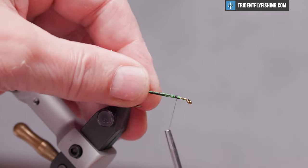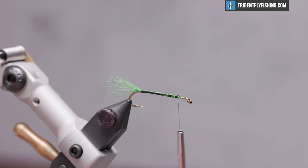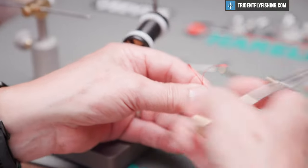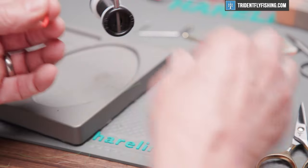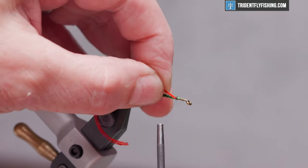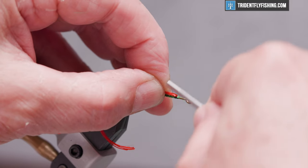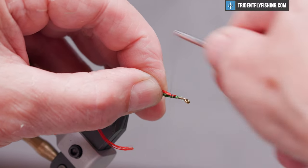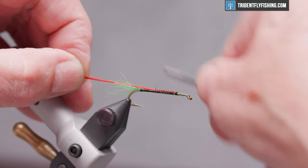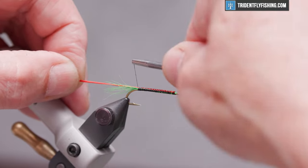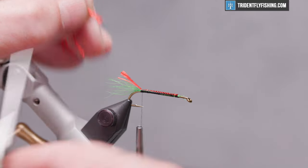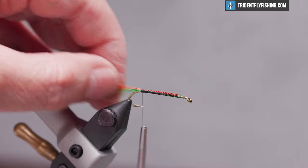Back up to the front we're going to tie in a red tag that's going to sit on top of the tail. For that we're going to use Danville's four-strand nylon. We'll use all four strands. We want this right on top of the hook. It's going to sit right on top of that green tail, and we want it to be about two-thirds the length of the tail.